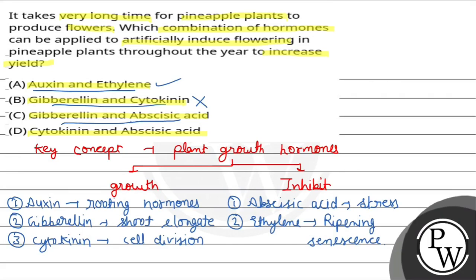Option D is cytokinin and abscisic acid. Cytokinin is mainly for cell division and abscisic acid is a stress hormone — it does not induce flowering. So option D is also wrong. Therefore, the correct answer is option A: auxin and ethylene. Hope you understood very well, best of luck.